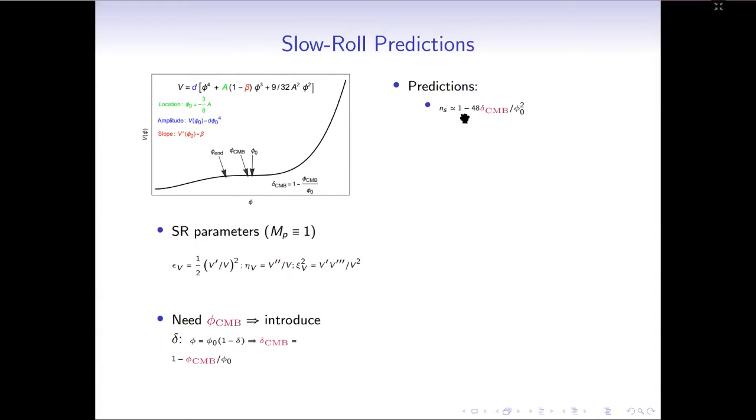First, let's look at the prediction for the spectral index. It turns out, because we know from experiments, the spectral index has to be less than 1, so delta_CMB has to be positive. And this is the reason why in our model, phi_CMB has to be on the left of phi_0.